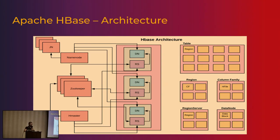Apache HBase is something a lot of developers have used. I will just give a very brief background of what is required for this talk. These are all the components required for running a production-grade HBase cluster: a quorum of journal nodes, a quorum of ZooKeeper nodes, a couple of NameNodes, a couple of HMasters, and a few DataNode RegionServers. DataNodes and RegionServers are typically co-located for certain performance benefits. To run a production-grade cluster, you need probably at least 13 pods.